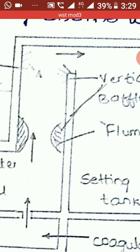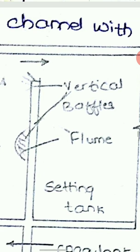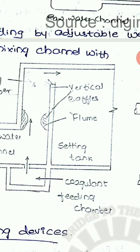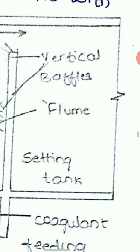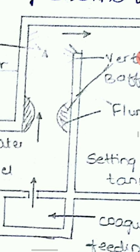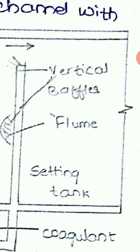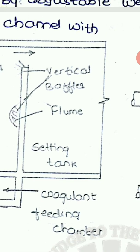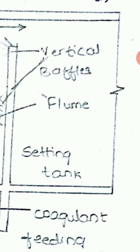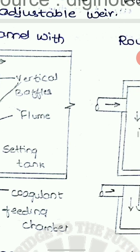When the water moves through the narrow mixing channel, it takes turns and flows in a circulation-type motion because of the baffles. The chemicals and raw water enter the settling tank, where settlement of impurities takes place, and then the clear water enters the next step.